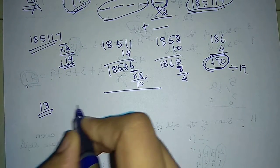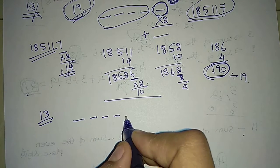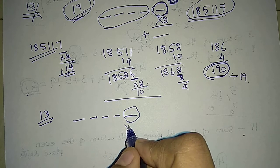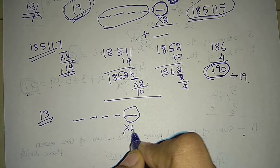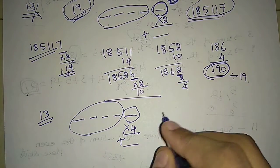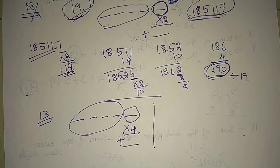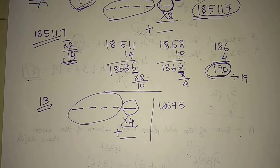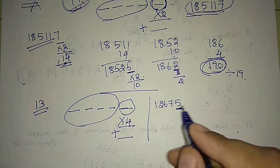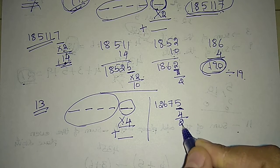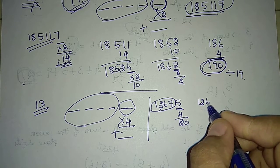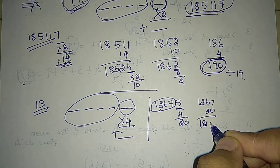Next, for 13: in the case of 13, also the same procedure — consider the last digit, multiply by 4, and add the answer with the remaining digits. Proceed like this to get the result. Consider the number 12675: take the last digit, multiply by 4 — answer is 20. Add it with the remaining digits — then answer becomes 1267 plus 20, which means 1287.